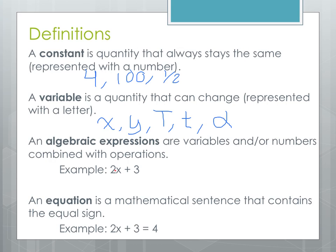An equation is a mathematical sentence that contains an equal sign. Here we have an example: 2X plus 3 equals 4. This equal sign is what takes us from an expression to an equation. So when you're doing your work, make sure to recognize whether or not you're asked for an expression or an equation. The expression won't have an equal sign, but an equation will have an equal sign.